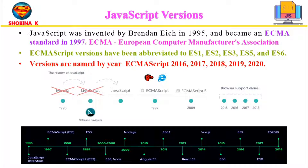ECMAScript is the official name of the language. ECMAScript is a JavaScript standard intended to ensure the interoperability of web pages across different browsers. It is commonly used for client-side scripting on the worldwide web, and is increasingly being used for writing server-side applications and services using Node.js and other frameworks.